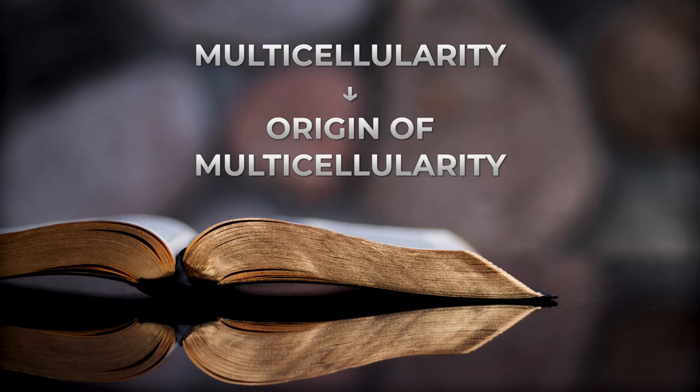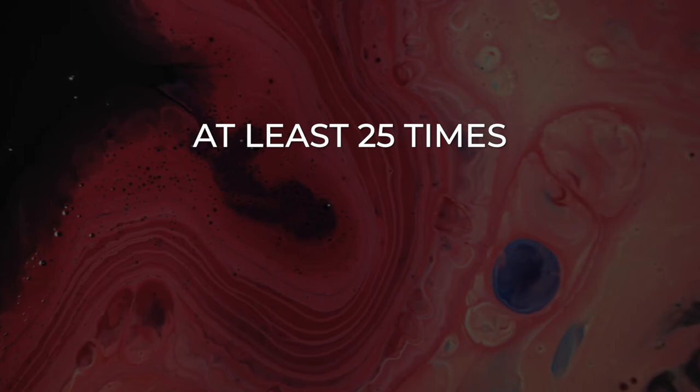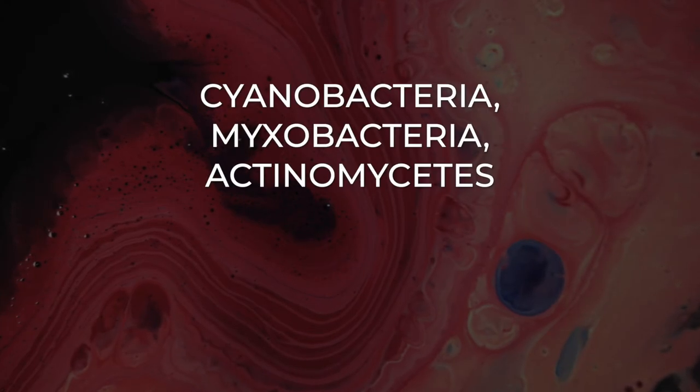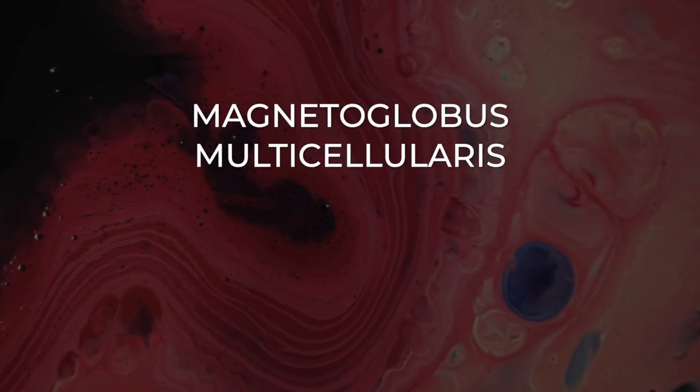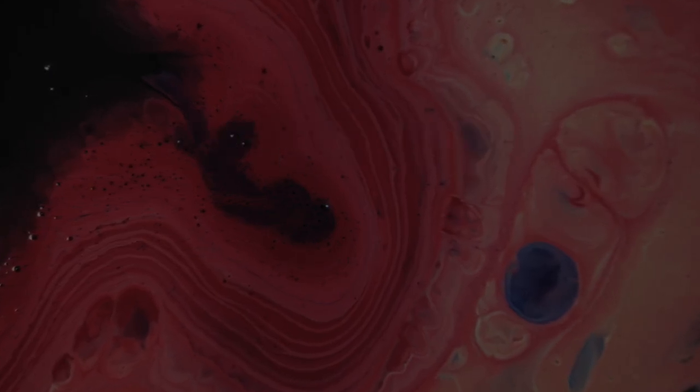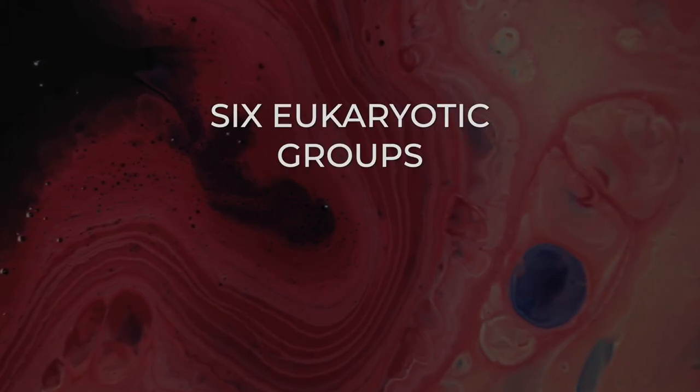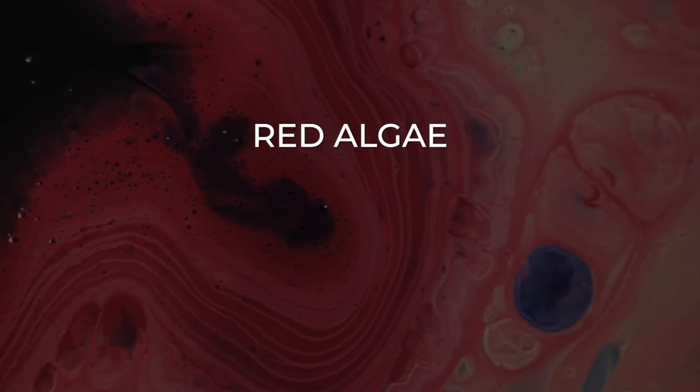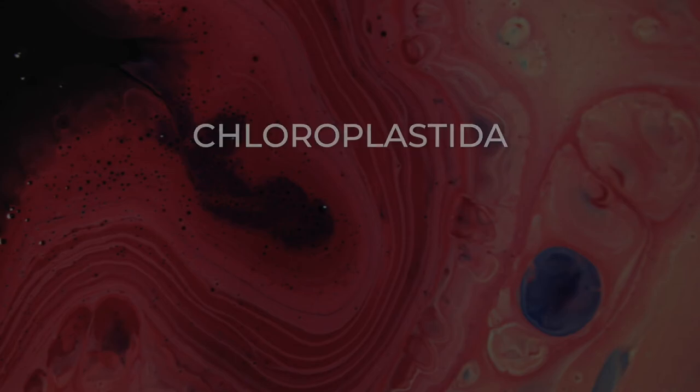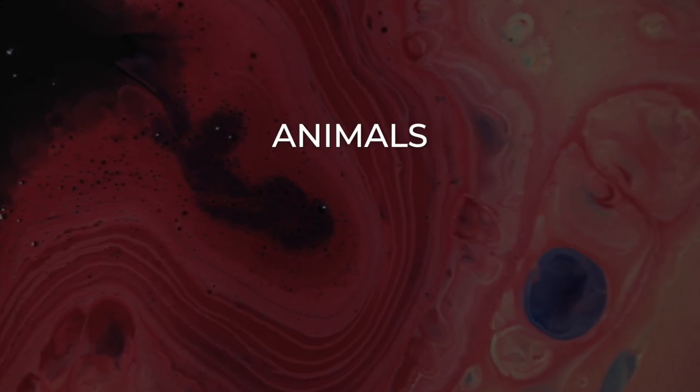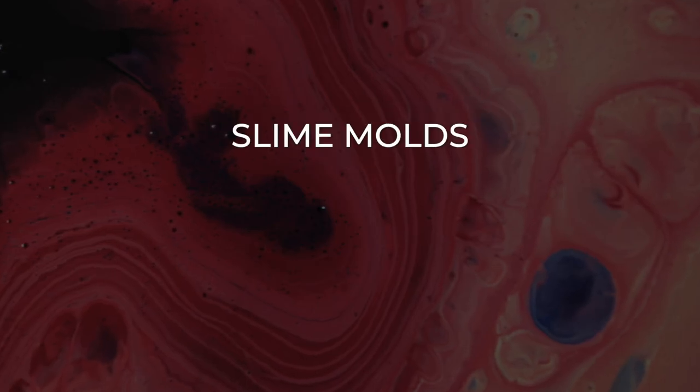Multicellularity has evolved independently at least 25 times, including in some prokaryotes, like cyanobacteria, myxobacteria, actinomycetes, magnetoglobus multicellularis or methanosarcina. However, complex multicellular organisms evolved only in six eukaryotic groups: animals, fungi, brown algae, red algae, green algae and plants. It evolved repeatedly for plants, chloroplastida, once or twice for animals, once for brown algae and perhaps several times for fungi, slime molds and red algae.